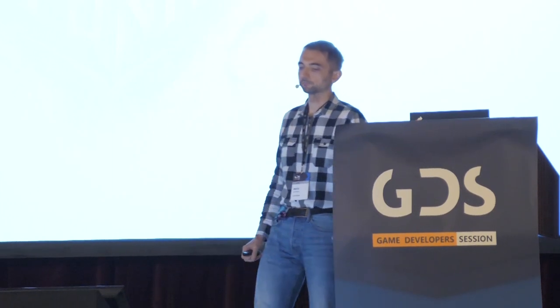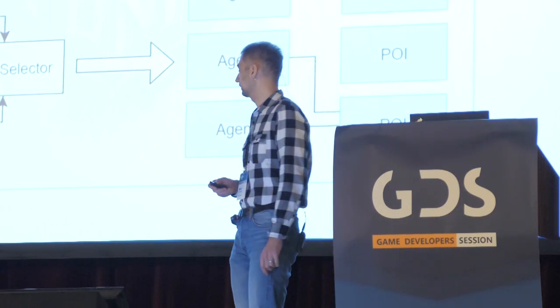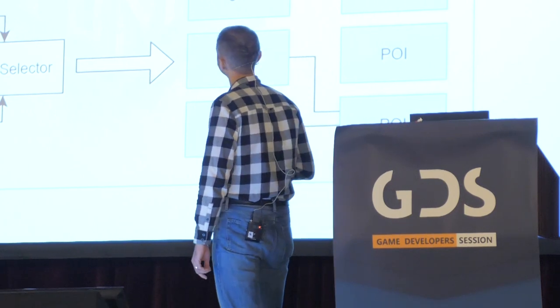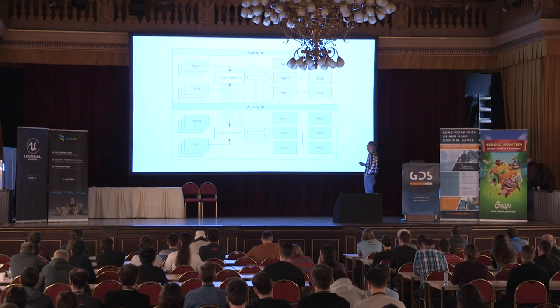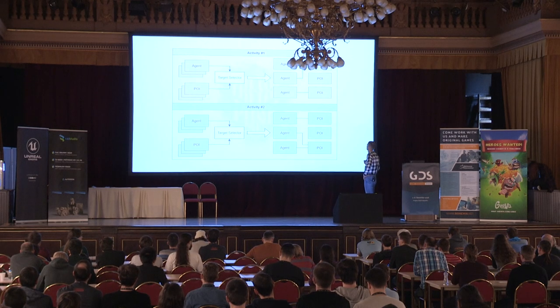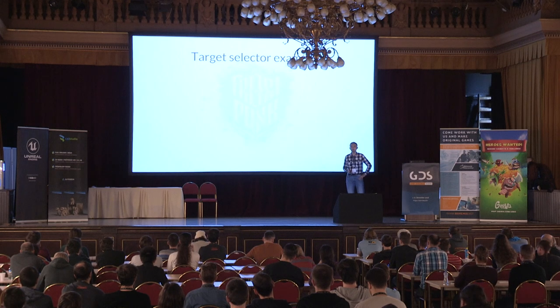The target selector does the magic and returns agent-POI matches. We have around 15 different types of target selectors in the game. Examples: the nearest target selector uses distance as the cost, no rebalancing, and is used for construction. The persistent assignments target selector uses assignment as cost — when you hire someone for a coal mine, a persistent assignment is created between the agent and the POI. If the assignment exists, the cost is very low; otherwise higher. No rebalancing, used for work.